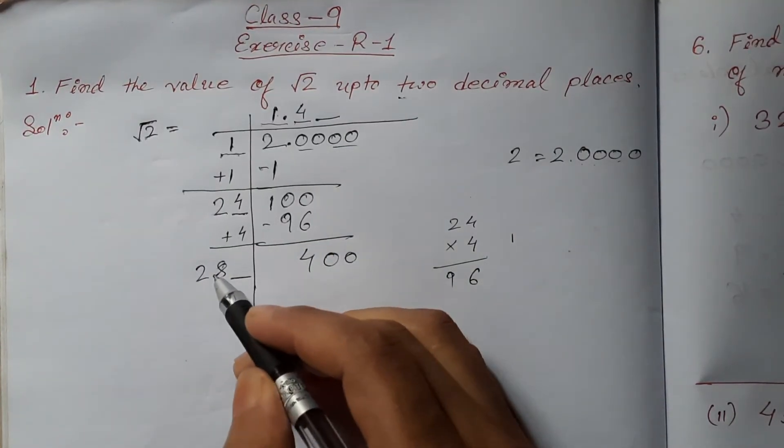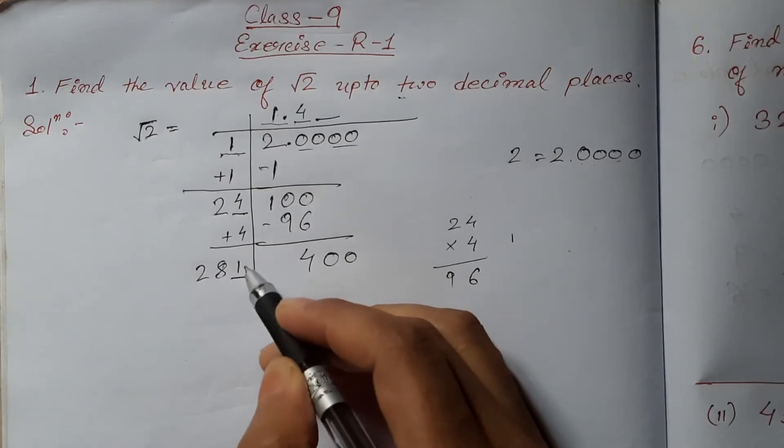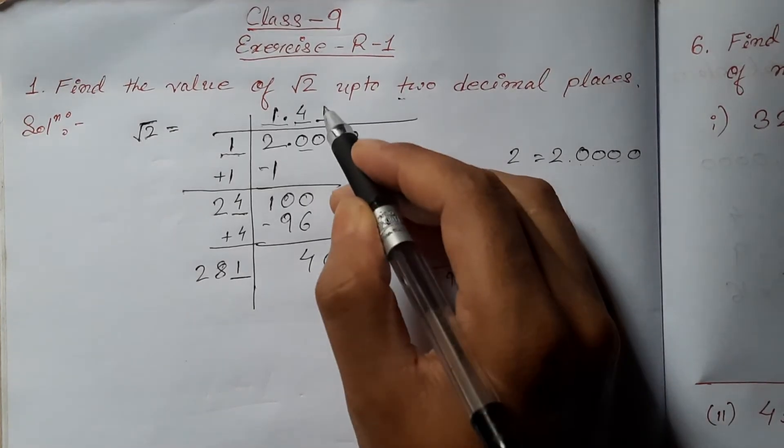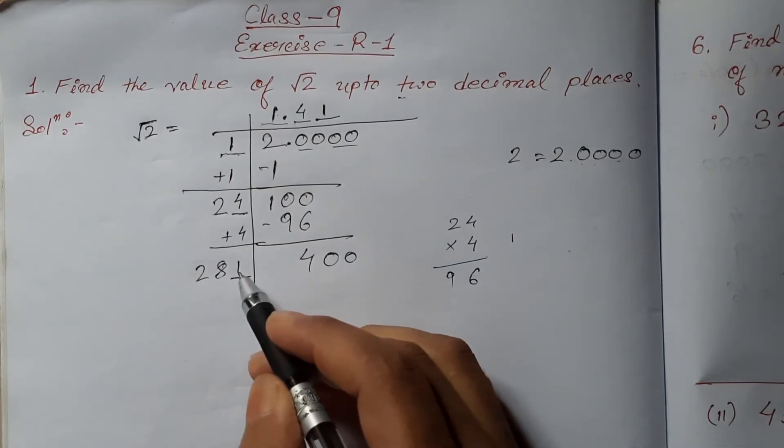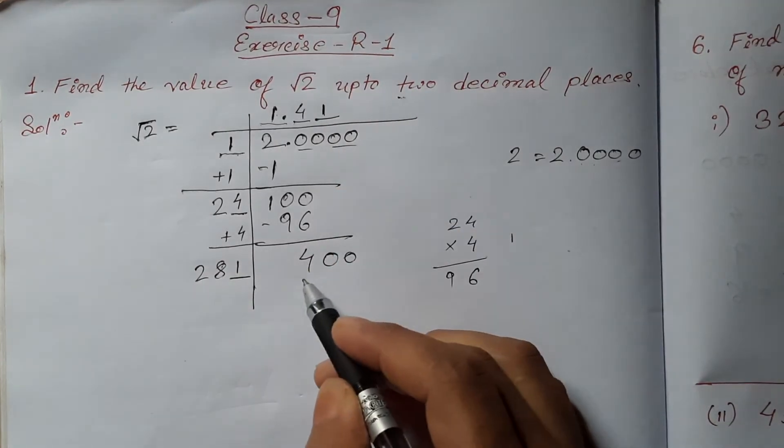So, 281: 1 in the divisor place and 1 in the quotient place. 281 multiplied by 1 is 281.